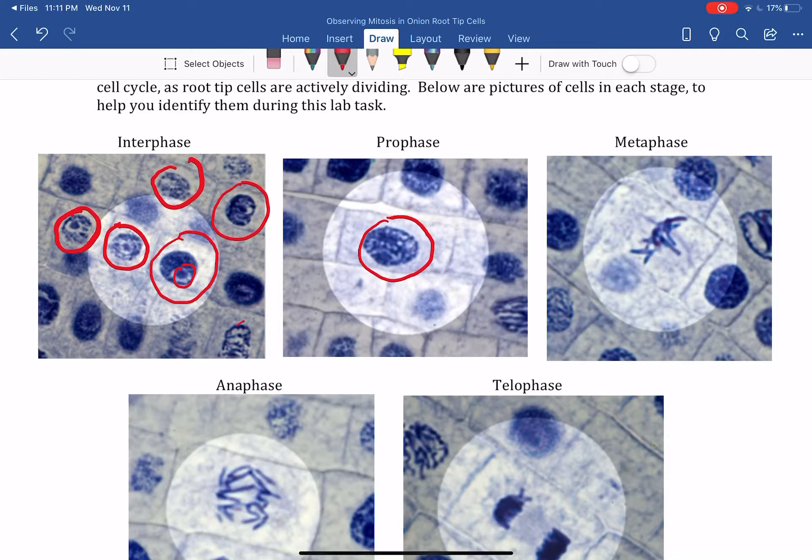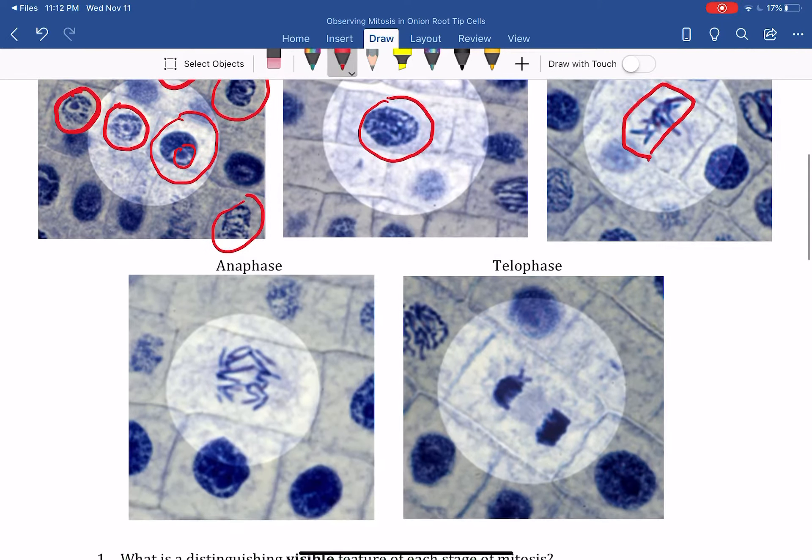And then in metaphase, metaphase is usually pretty easy to pick out. You have chromosome structures there and they're all lined up together in the middle. In anaphase, you have the chromosomes that are beginning to pull apart. Now some of them may appear more or less apart than these two, but that would be anaphase.